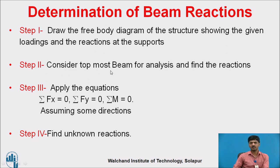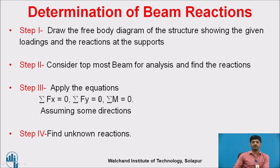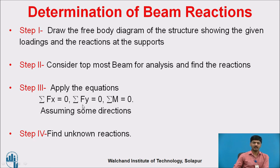Second step: consider the topmost beam, which is the second segment, and analyze it to find the reactions. Third step: apply the static equilibrium equations — summation Fx = 0, summation Fy = 0, and summation M = 0. By referring to the sign conventions, identify and calculate the unknown reactions.